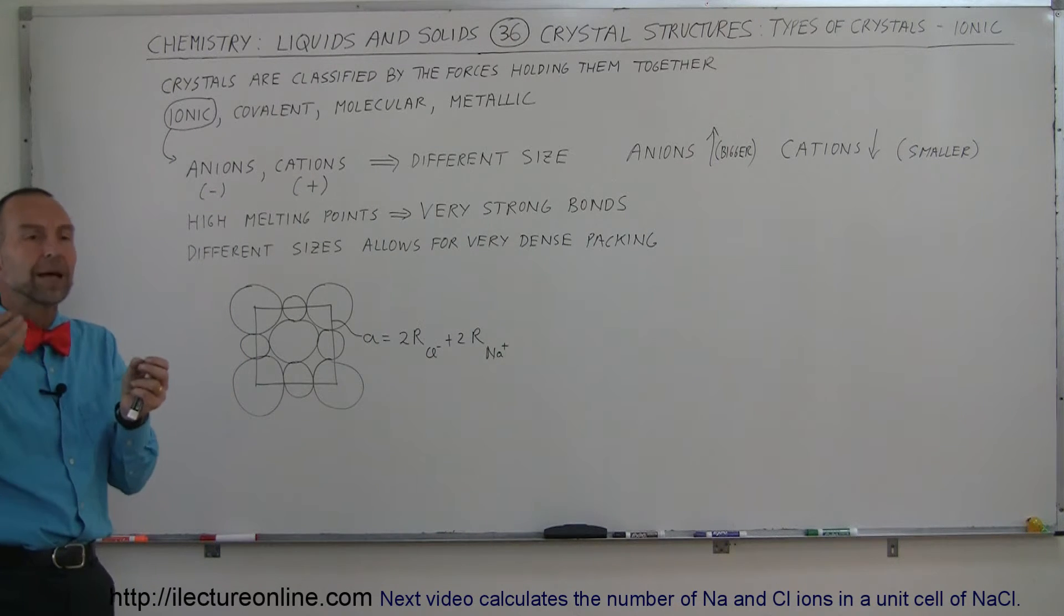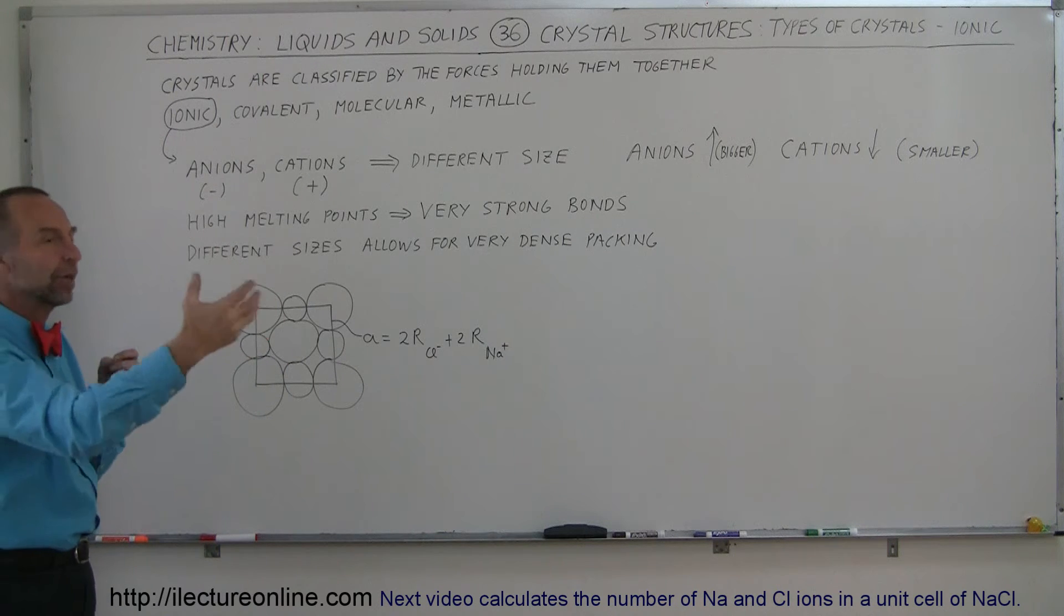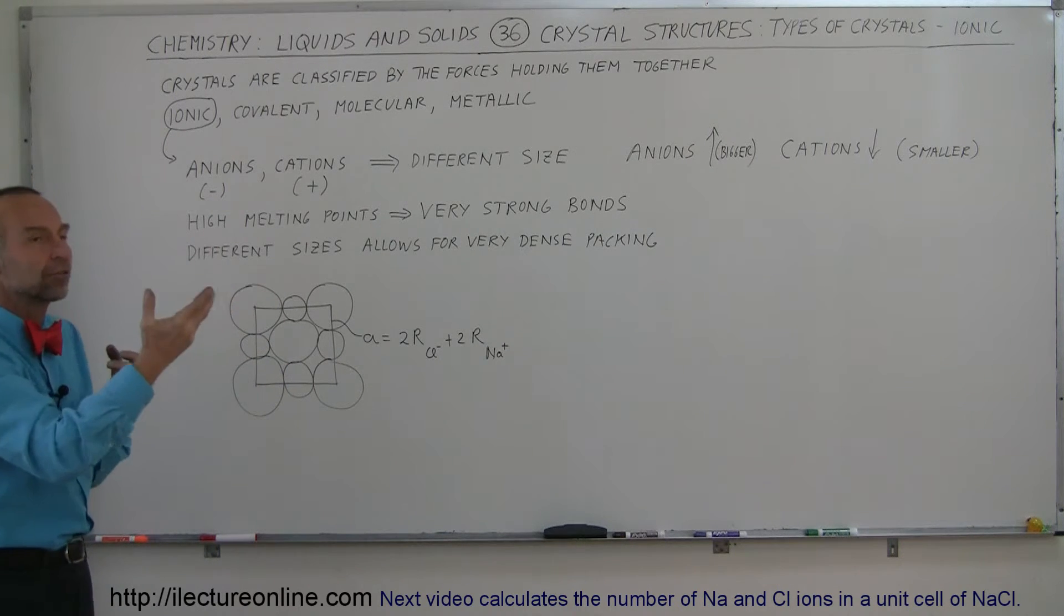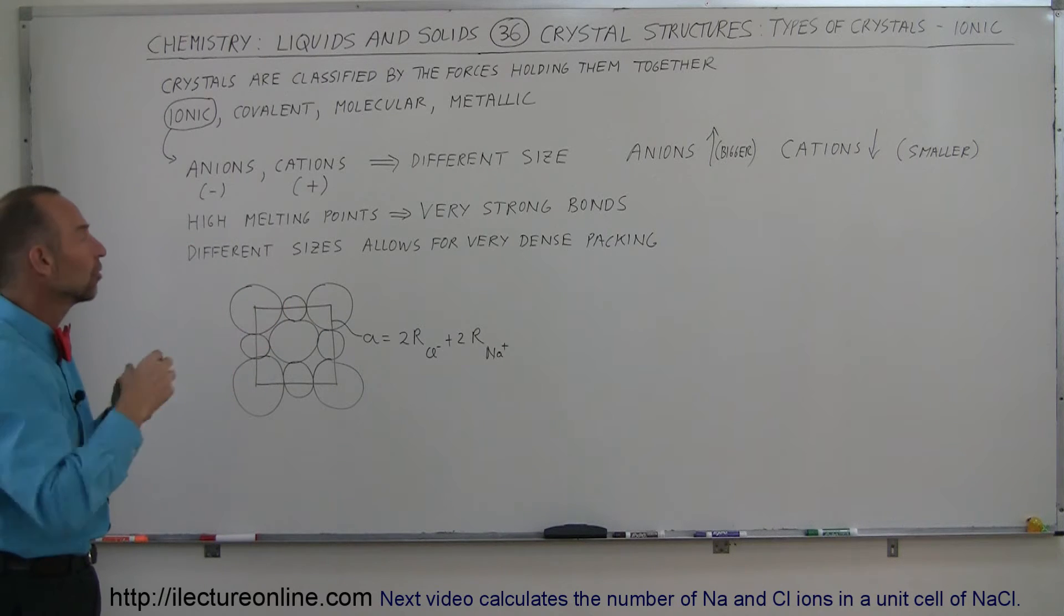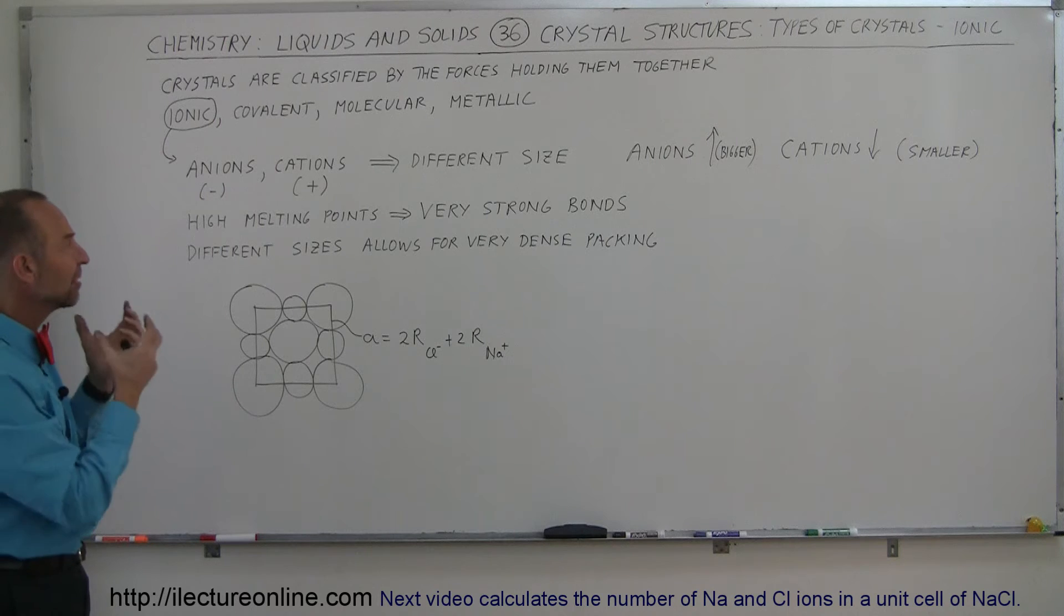Those are usually accomplished by the anion gaining electrons from the other element, and the element that's losing electron becoming a cation, because it loses electron and becomes positively charged. Because of that, they have different sizes.